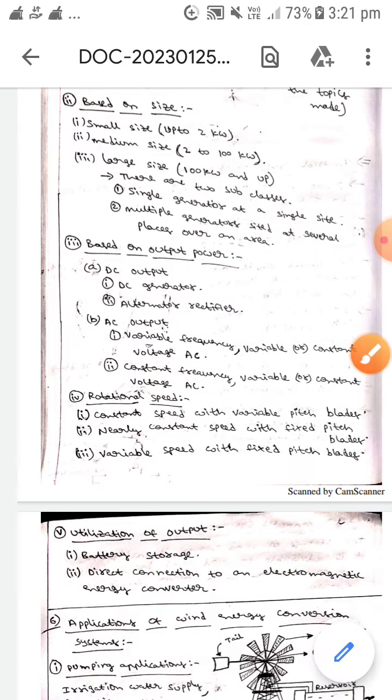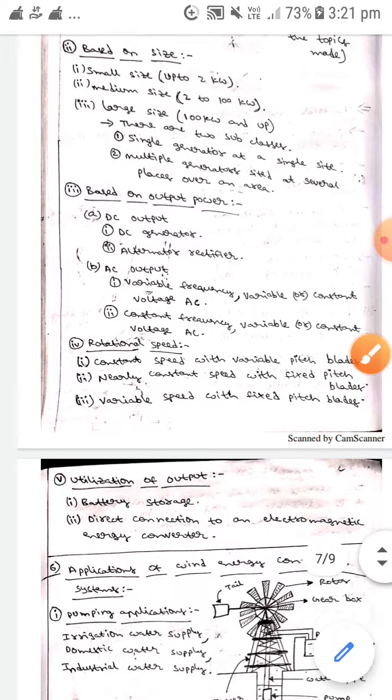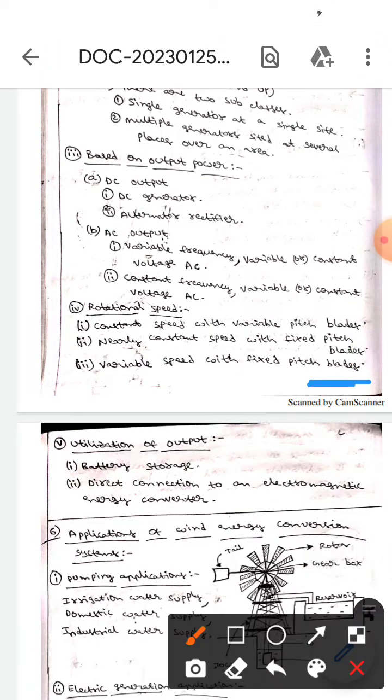The next classification is rotational speed. There will be constant speed with variable pitch blades, or nearly constant speed with fixed pitch blades, or variable speed with fixed pitch blades.